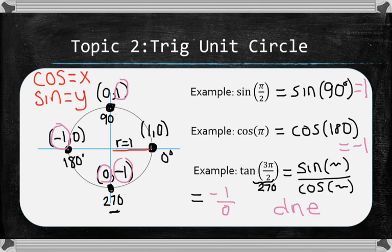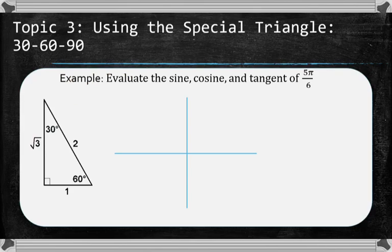No memorization required. Now, you will have to memorize the actual special triangles. 30, 60, 90 and 45, 45, 90. The triangle 30, 60, 90 is shown to the left.